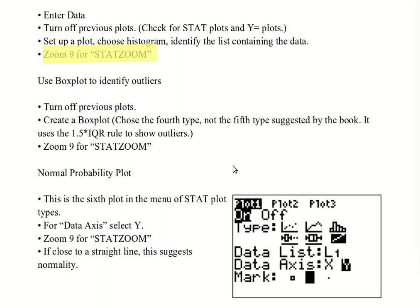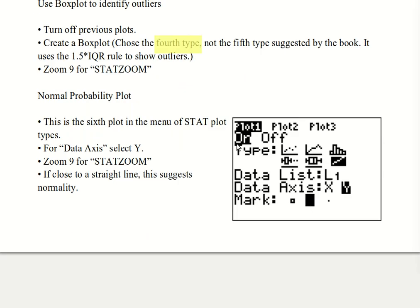Box plots help us identify outliers. We turn off any previous plots and create a box plot. Something different from our text: we use the fourth type, not the fifth, because it uses 150% of the interquartile rule to show us outliers. Then again, zoom 9 for zoom stat.